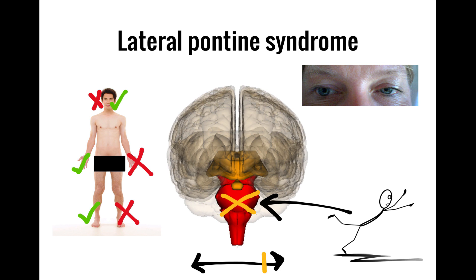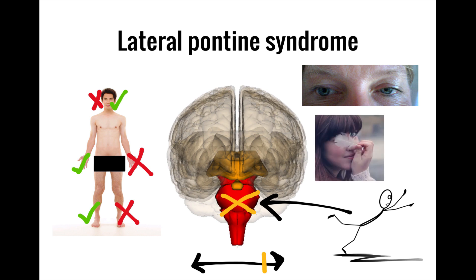Only the level of the lesion has changed, meaning that different cranial nerves are involved — cranial nerves five through eight are now at play. With the seventh cranial nerve affected, facial sensation and loss of taste from the anterior two-thirds of the tongue can appear. In addition, involvement of the eighth nerve can result in partial or complete deafness.